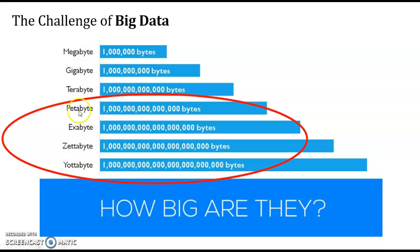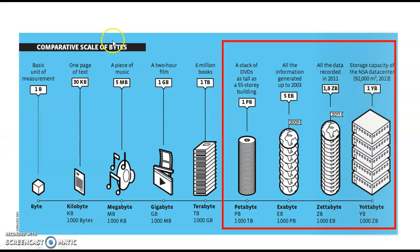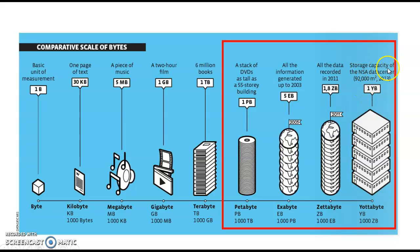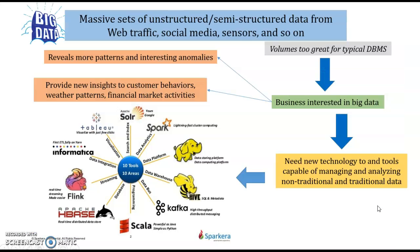Looking at units of measurement: we start from bytes, then megabytes for text or music, gigabytes for films and Blu-ray, 6 million books equals 1 terabyte, a stack of DVDs as tall as a 55-story building is 1 petabyte, all information generated up to 2003 is an exabyte, all data recorded in 2011 is a zettabyte. Big data is a massive set of unstructured or semi-structured data from web traffic, social media, census, and so on — volumes too large for typical DBMS.